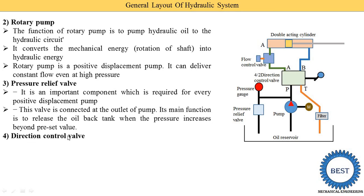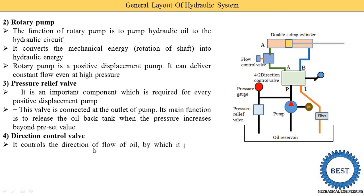The next component is the direction control valve. From its name, you can understand that it changes the direction of oil or guides the oil in the proper direction. It is not necessary that the oil from the pump is supplied to only one system. Since we use a double acting cylinder, we need to supply oil in two directions — either through pipe A or through pipe B. The direction control valve decides this, sometimes supplying oil through pipe A and sometimes through pipe B. It controls the direction of flow of oil, by which it performs extension and retraction of the actuators.